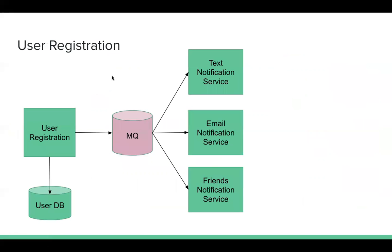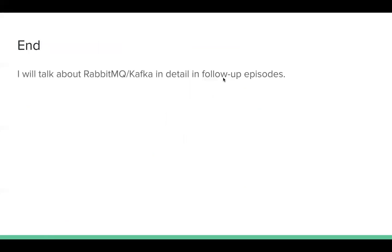In our initial example using a message queue, when the user registration service receives the user request, it saves the username, password, and email address to the user database, then pushes tasks to the message queue and returns a response to the user saying registration is successful. There may be three different queues — one for text notification, one for email notification, and one for friend notifications. Later, the three services consume the corresponding messages from the queues and send the notifications.